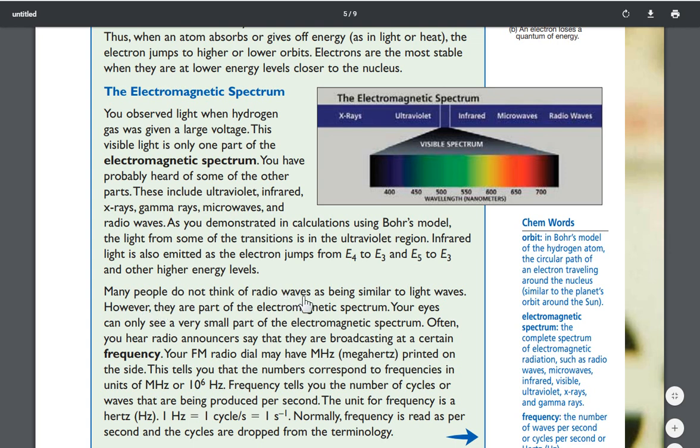Many people do not think of radio waves as being similar to light waves. However, they are part of the electromagnetic spectrum. Your eyes can only see a very small part of the electromagnetic spectrum. Often you hear radio announcers say that they are broadcasting at a certain frequency. Your FM radio dial may have megahertz printed on the side. This tells you that the numbers correspond to frequencies in units of megahertz or 10 to the sixth power hertz.